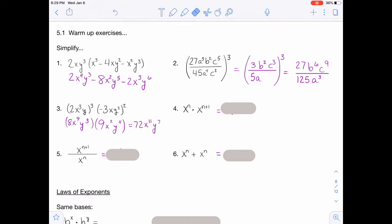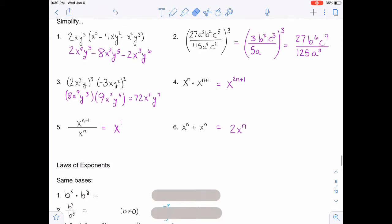Number four, you should end up with x to the 2n plus 1. For number five, you should end up with just an x because the rule there is that you will subtract those. And n plus 1 minus n just gives you the 1. And then this one may be a little bit tricky. You just add those two together. So it's 1x to the n plus 1x to the n. So you get 2x to the n. So hopefully you remembered a lot of those rules.